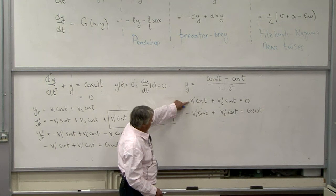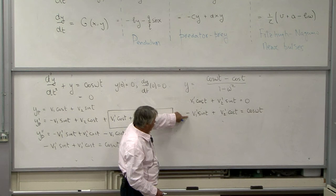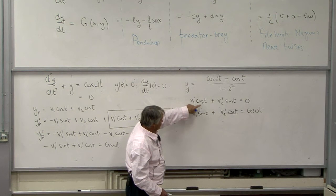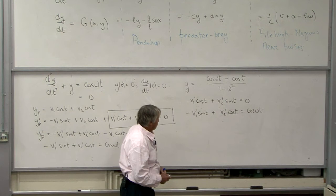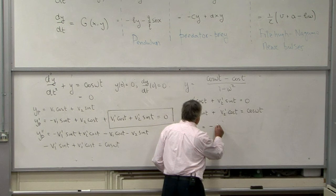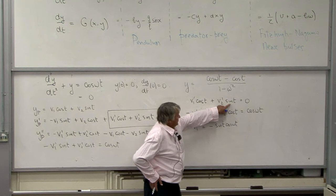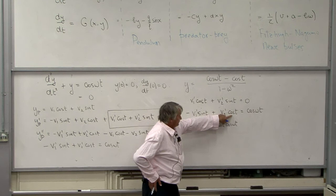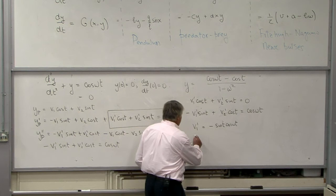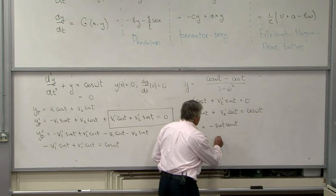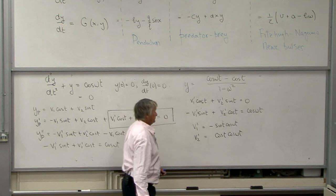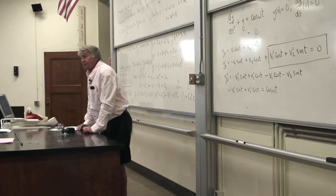To solve the two equations, multiply the constraint by cosine and the second equation by -sin t: V₁'(cos²t + sin²t) = 1, so V₁' = -sin t·cos(ωt). Then multiplying by sin t and cos t appropriately, V₂'(sin²t + cos²t) = cos t·cos(ωt), so V₂' = cos t·cos(ωt).